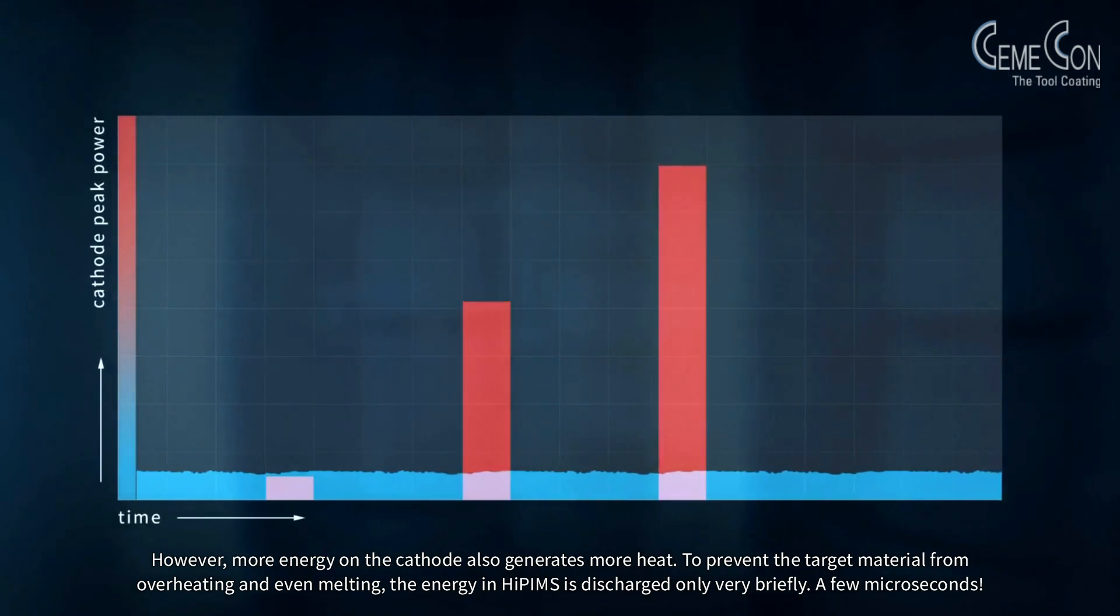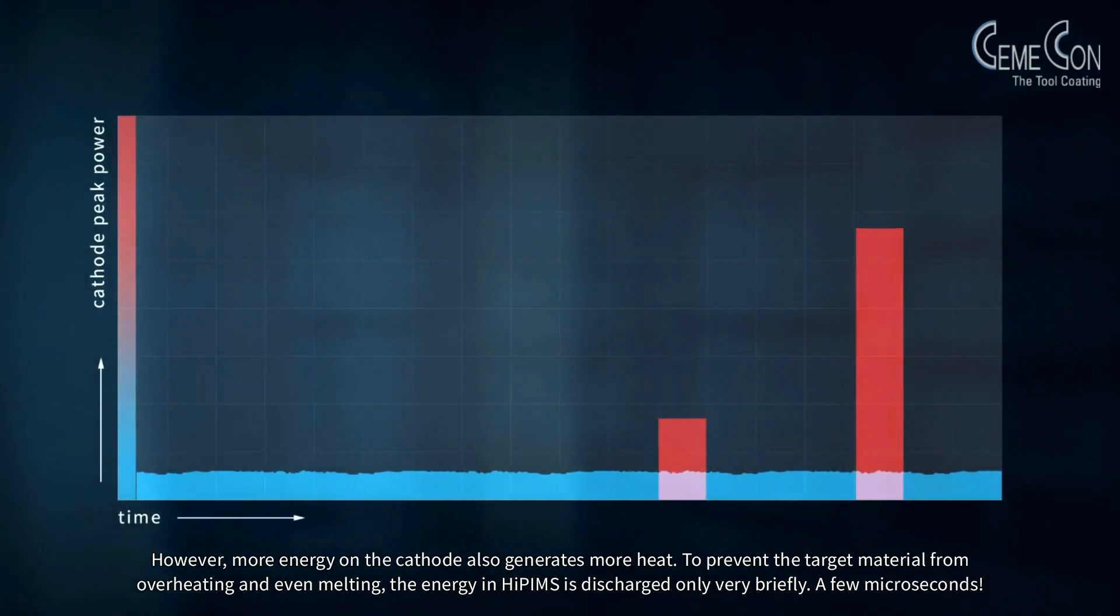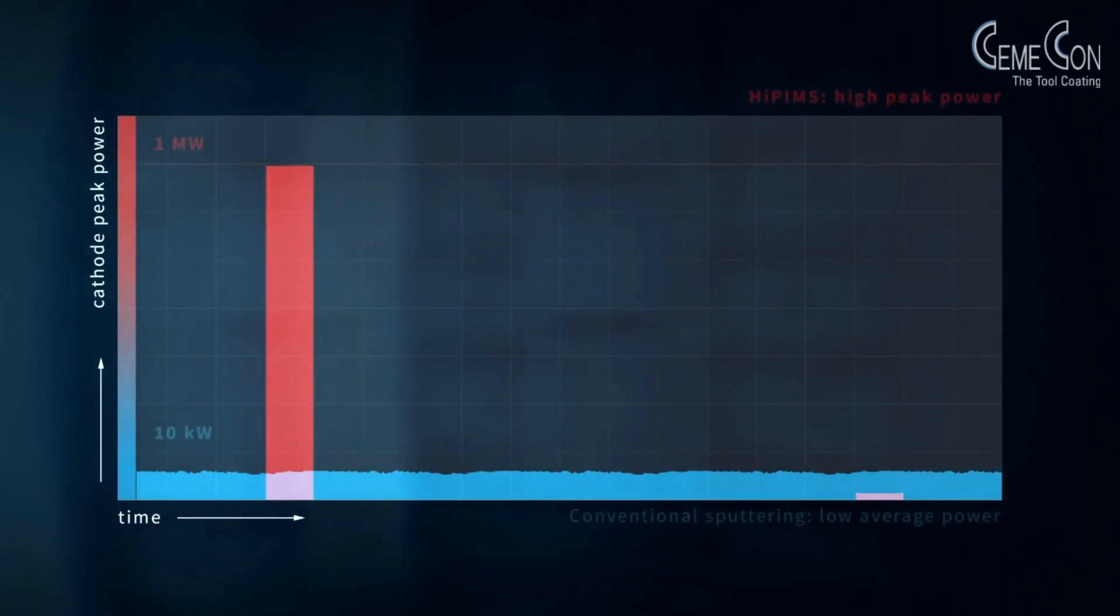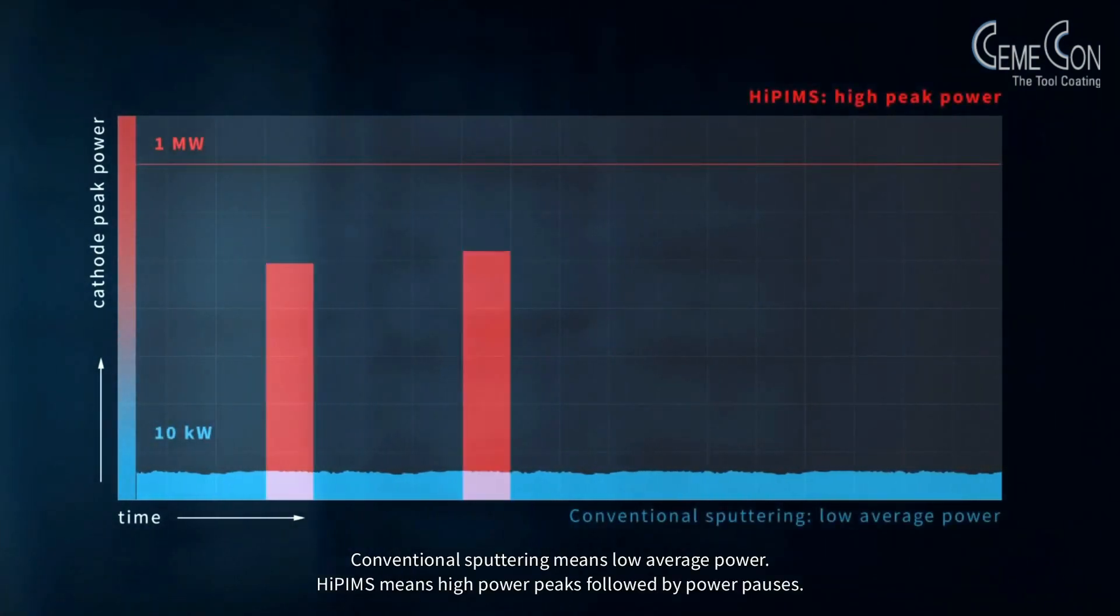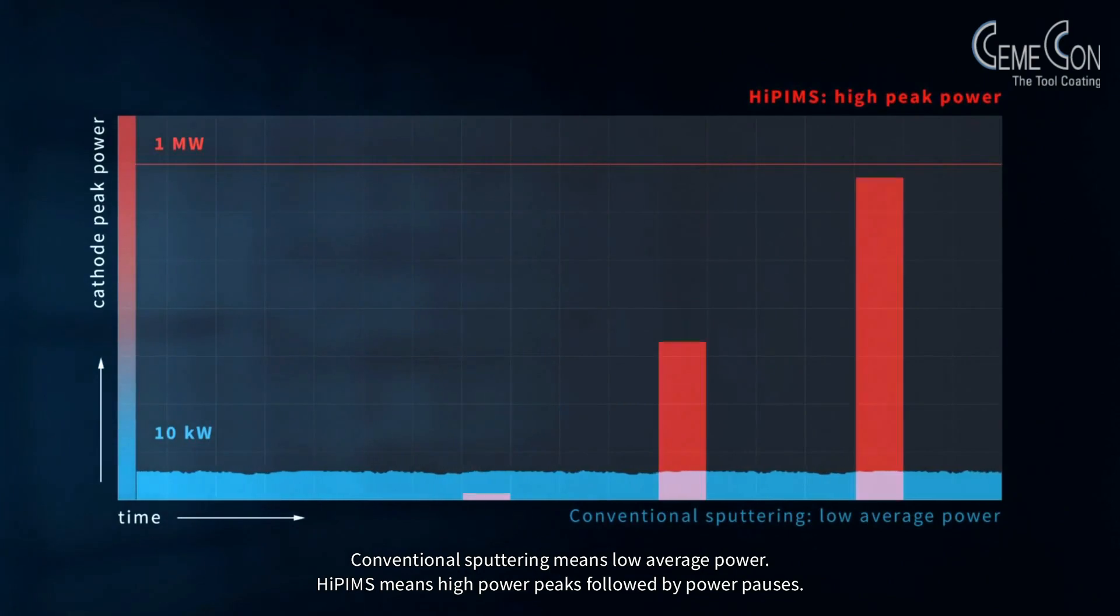To prevent the target material from overheating and even melting, the energy in HiPIMS is discharged only very briefly, a few microseconds. Conventional sputtering means low average power. HiPIMS means high power peaks followed by power pauses.